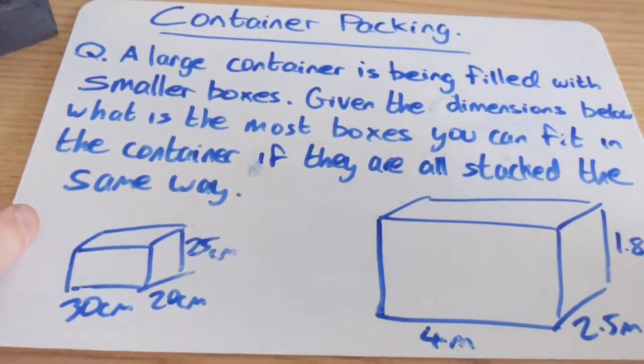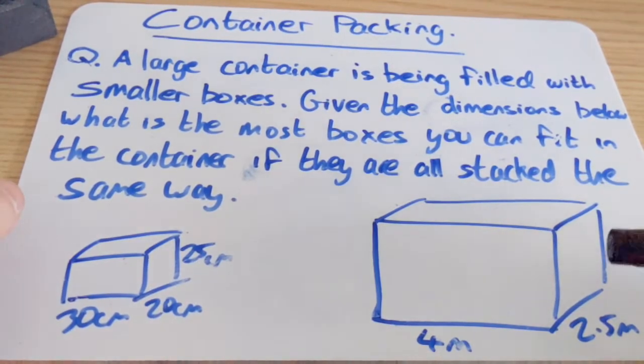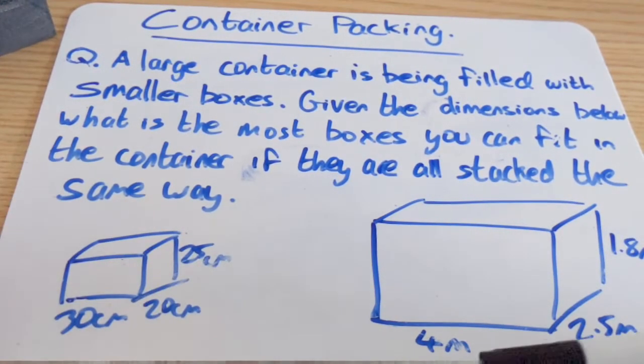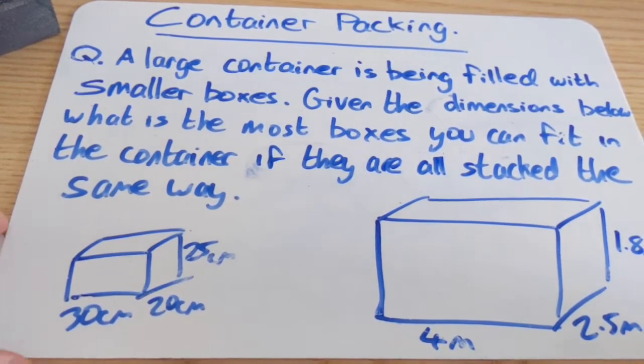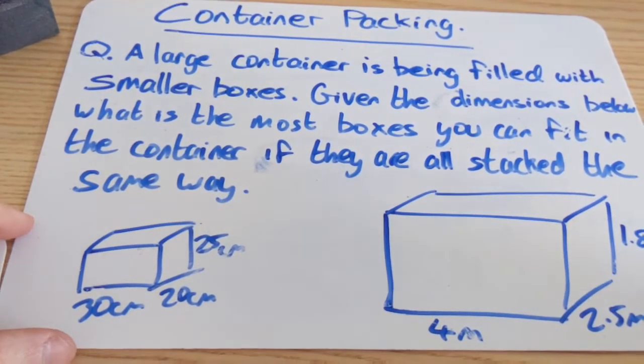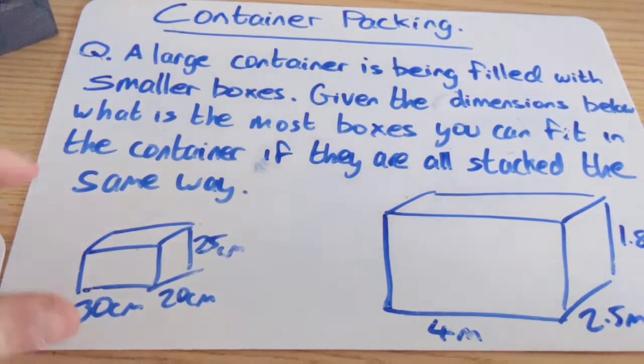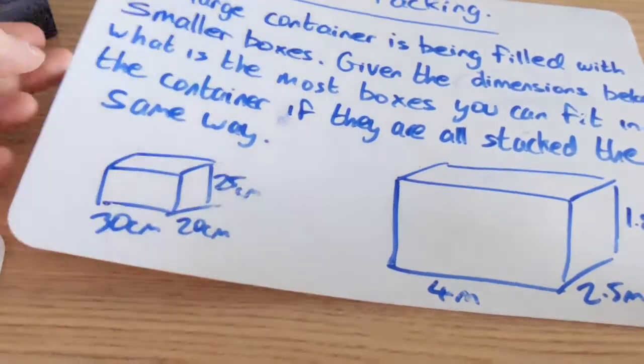The fact that they all have to be stacked the same way is important because it means we can't just find the volume of the larger one, find the volume of the smaller one and then divide them. We instead have to find out all the different combinations of stacking the boxes and how many we can fit by stacking it that way.